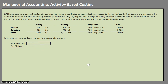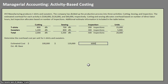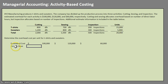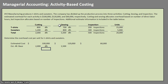For the cutting department our estimated cost was $100,000. For sewing it was $120,000. And for inspections it was $60,000. The units column tells us how many units of each one we actually produced. The estimated allocation base changes depending on what we're looking at: for cutting it was 2,000 direct labor hours, for sewing it was 1,500 direct labor hours, and for inspections it was 500 inspections.